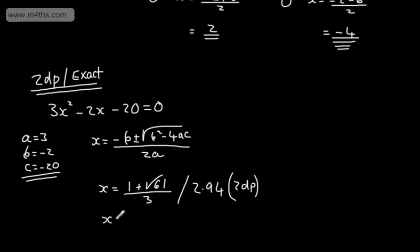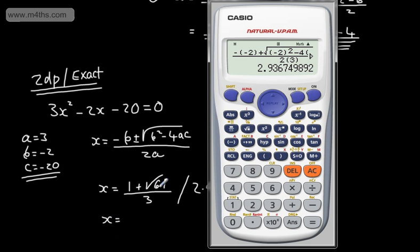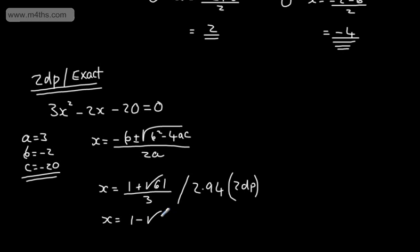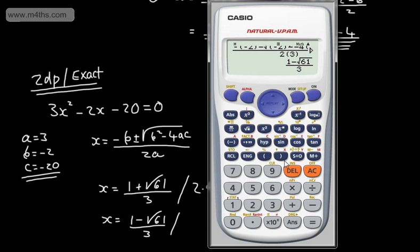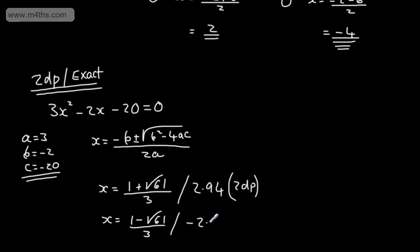Switching the plus to a minus in the numerator, we get the exact answer x equals 1 minus the square root of 61, over 3. As a decimal answer, that gives negative 2.27, correct to two decimal places. Nice and straightforward — we've just plugged the numbers in.